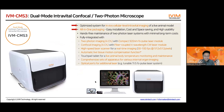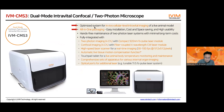To obtain those live videos, we use this dual-mode intravital confocal/two-photon microscope called IVIM CMS3. As you can see in this picture, it's an all-in-one packaged, optimized system for in vivo cell-level intravital imaging of a live animal model. It's a single-box design — everything is inside, so we can easily install it, save cost and space, and it's quite easy to use. You can control everything from outside the box.